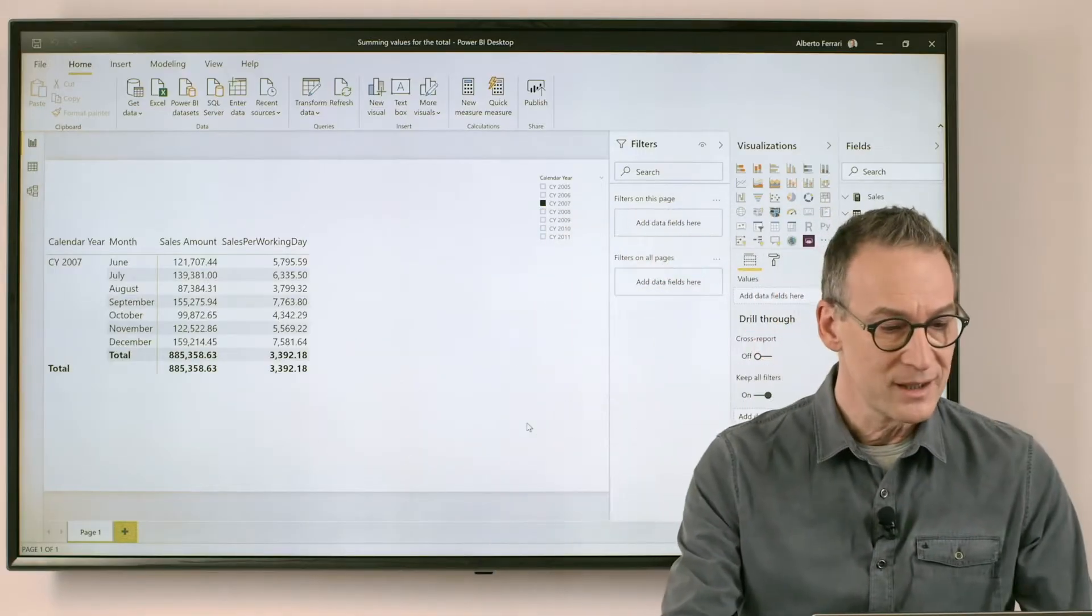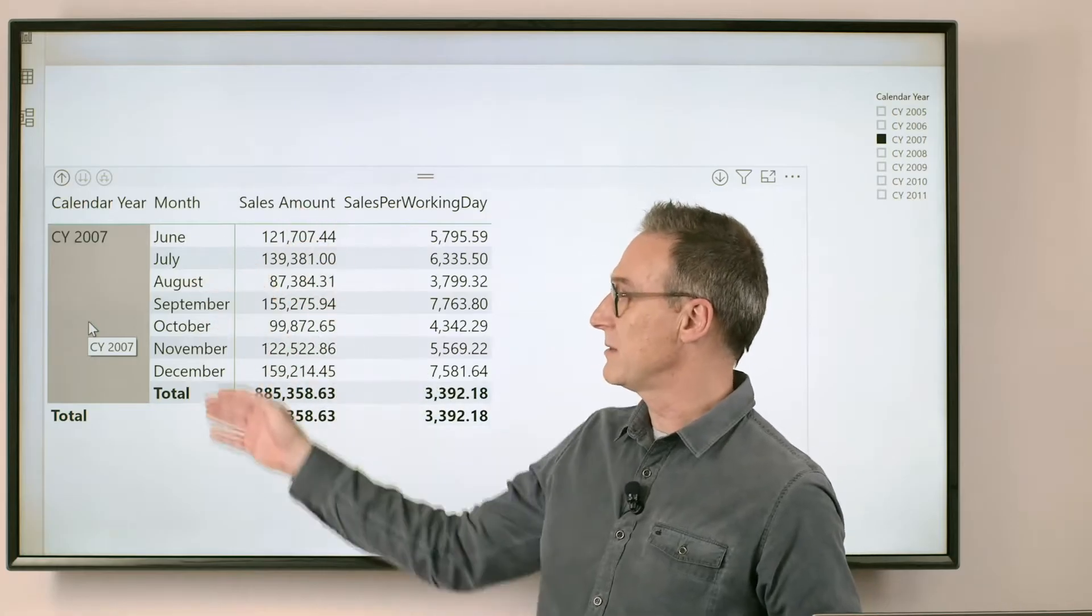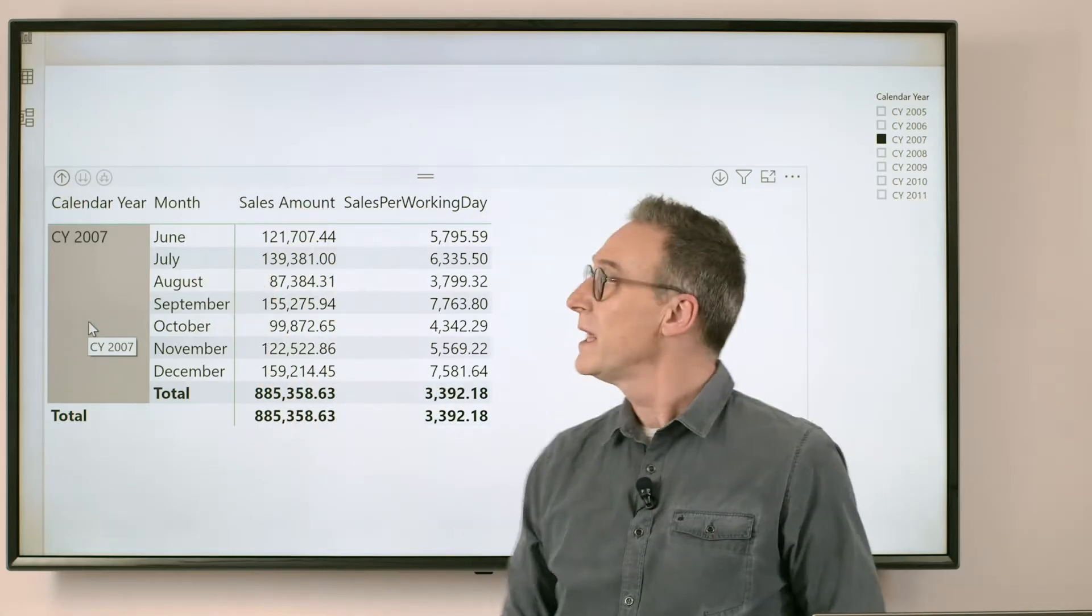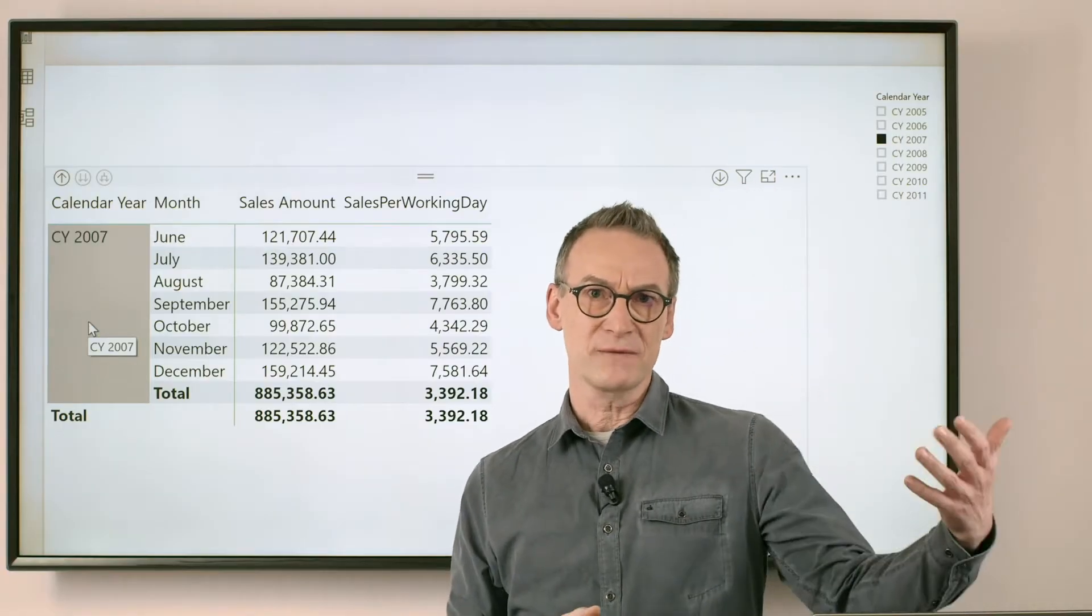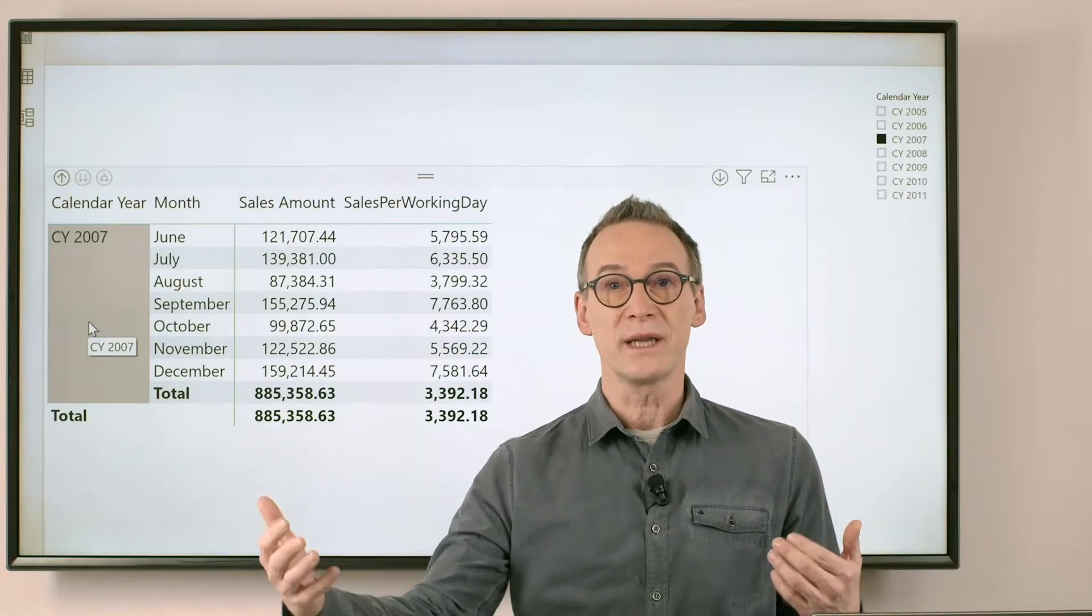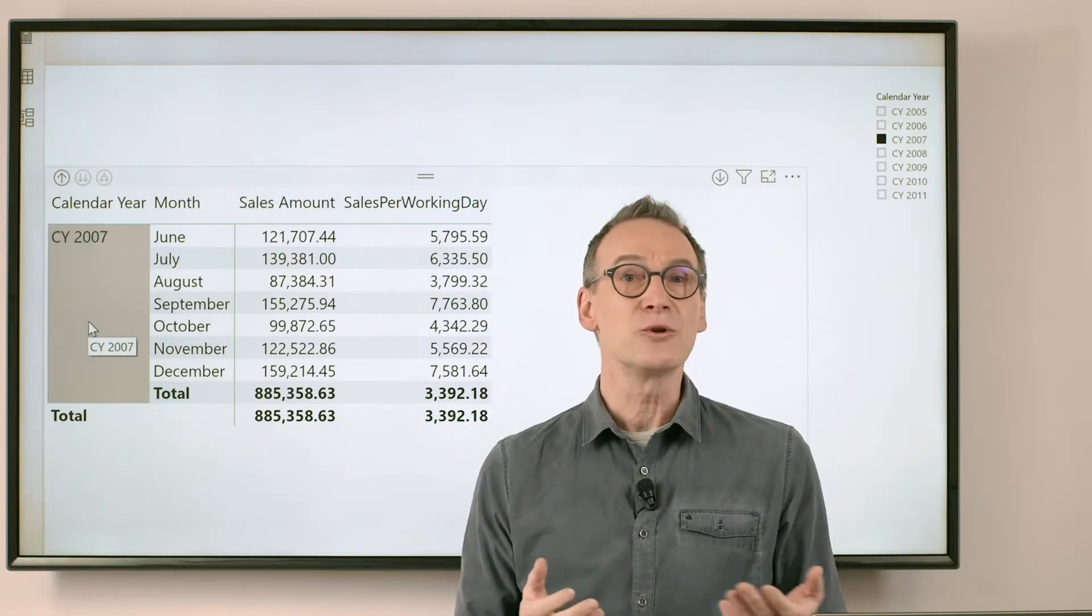Let's take a look at this report. In this report, I'm showing the sales amount by several months in 2007, and then I'm computing the sales per working day, which is the amount of sales divided by the number of working days month by month. The number is wrong, and how do we know it?